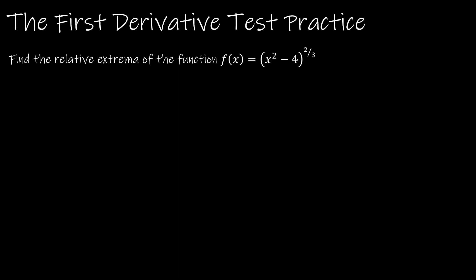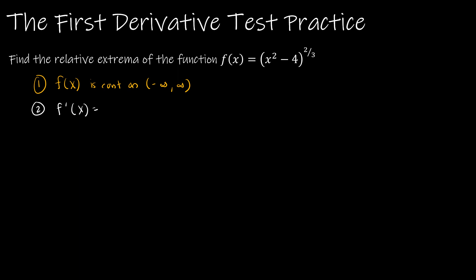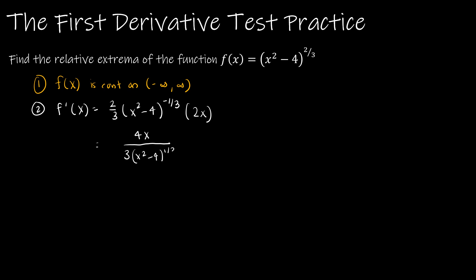Let's do this question together. I did not give you a polynomial function because it's good to practice other types. f(x) is continuous on the entire interval negative infinity to infinity because this is just a cube root — no issues with negative values or a denominator. So it's continuous everywhere. Step two: find the derivative. f′(x) uses the chain rule: two-thirds times (x²−4) to the negative one-third, times the derivative of (x²−4), which is 2x. Cleaning that up: the numerator is 4x, the denominator is 3(x²−4) to the one-third.